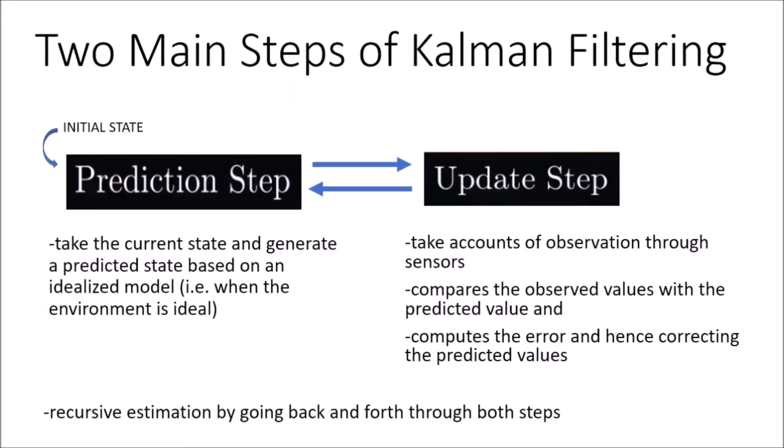These are the two main steps in Kalman filtering. The first step is known as the prediction step, and the second step is called the update step. In the prediction step, the algorithm takes an initial state and generates a predicted state based on an idealized model. In the update step, the algorithm takes into account the sensor measurement. Both the observed value and the prediction are compared to calculate an error, and based on that error, the predicted value is corrected. Overall, the Kalman filter revolves around both of these steps, and the process is repeated recursively.